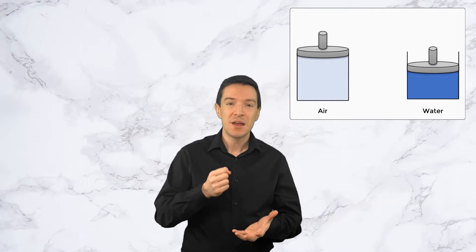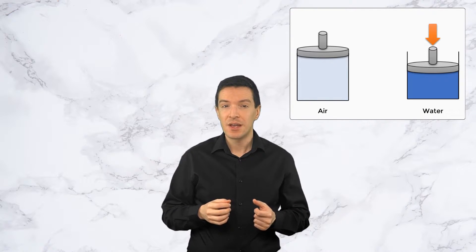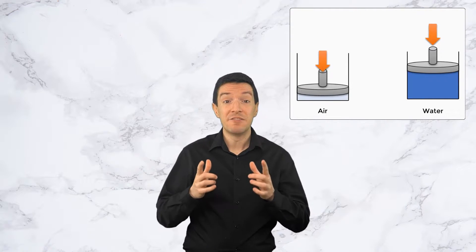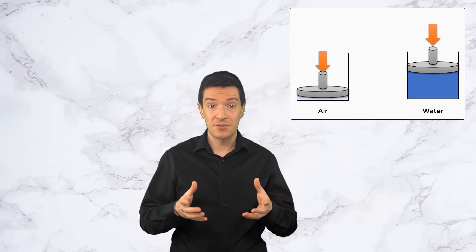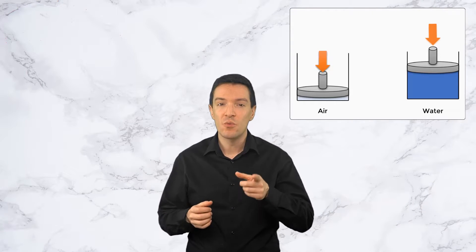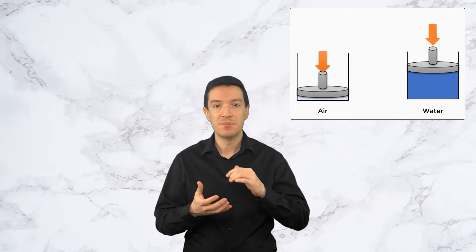If you try pushing the piston down in the cylinder containing water, you will notice that the piston does not move at all. While, if you try pushing the piston down in the cylinder containing air, the piston will move for a distance before it stops and cannot move further down. This shows that the air, and in general any gas, is more compressible than water or any liquid.